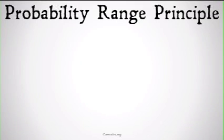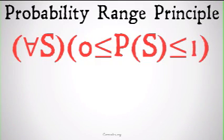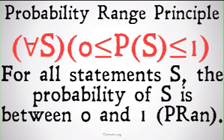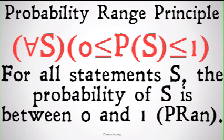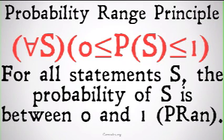The first rule deals with that — it's the probability range principle. It says that for all S, the probability of S is between zero and one inclusive. I'm going to represent that as P-ran, or the probability range, whenever it's used in proofs. This should seem fairly intuitive: we understand probability as a number between zero and one inclusive. It wouldn't make sense to have a negative probability or a probability greater than one.